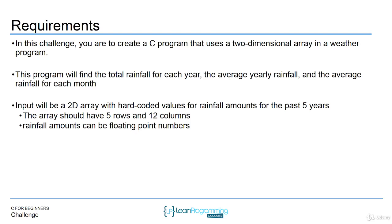The rainfall amounts should be floating point numbers, because you often get something like 7.8 inches of rain for a month. So when you create this two-dimensional array, make sure that it's a float.